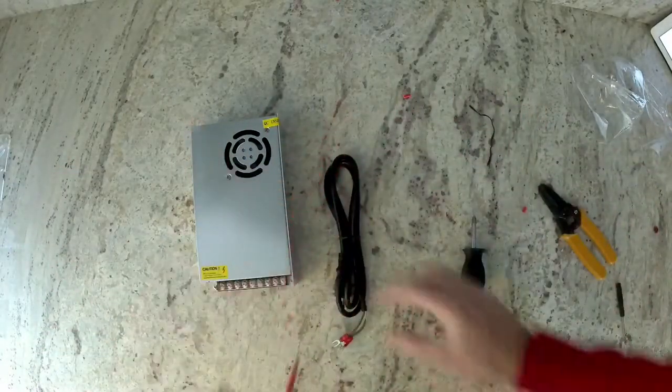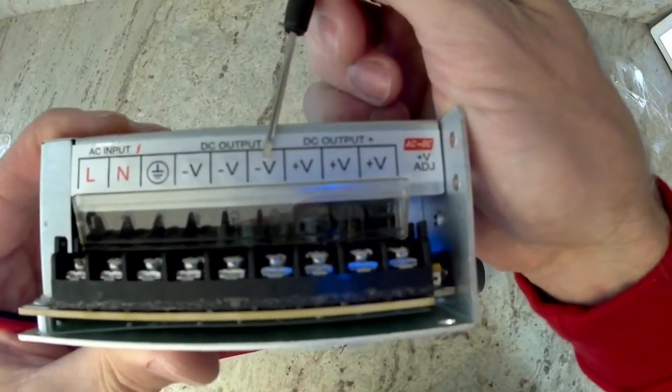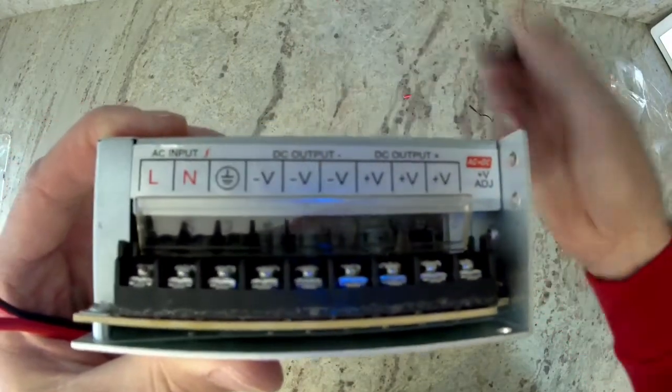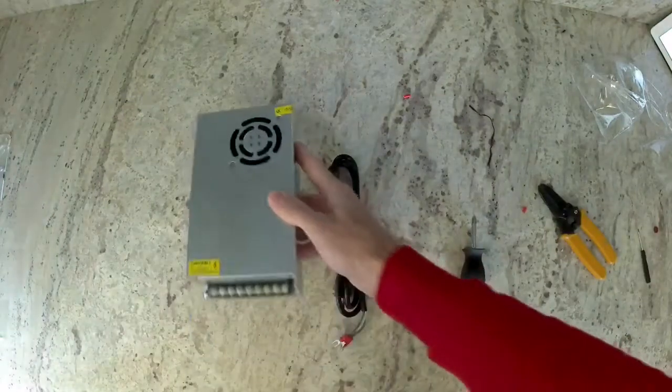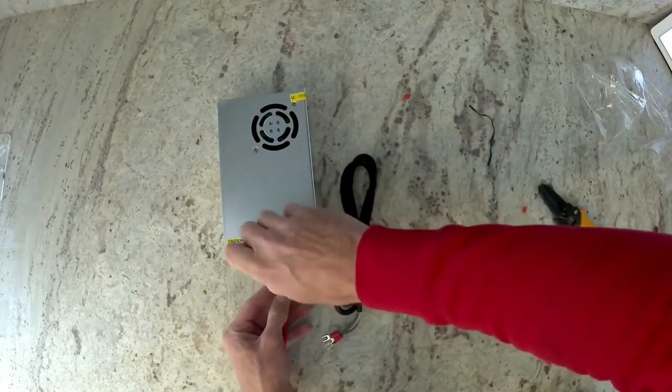This wire is going to be the main wire that supplies power to your printer. If you notice on your power supply, you have V minus and you also have a V plus. The red wire, we're going to put in the V plus. The black wire, we're going to put into the V minus.